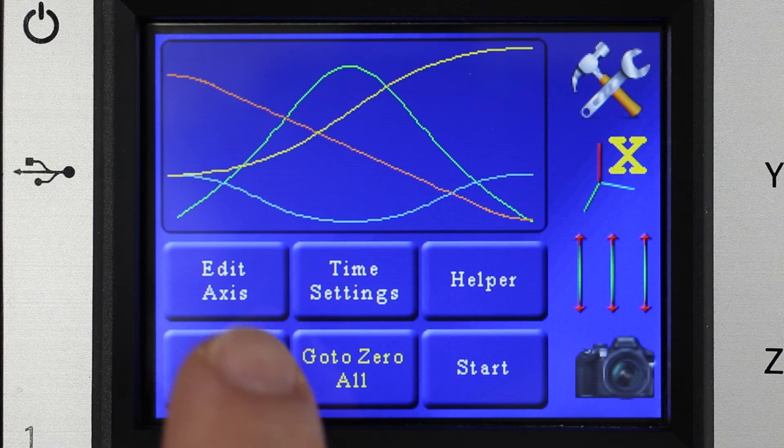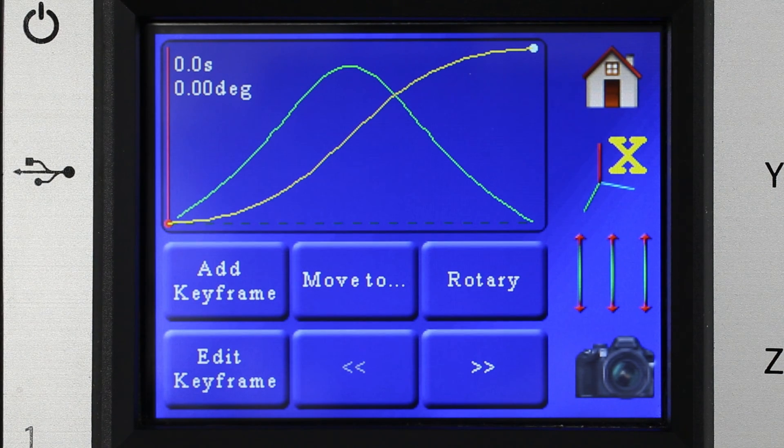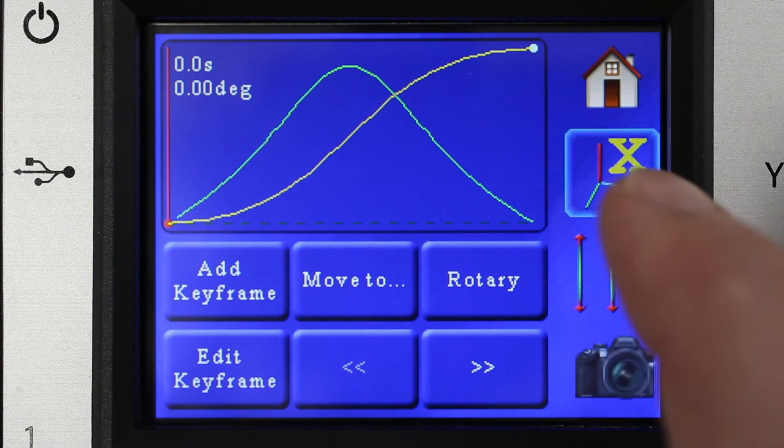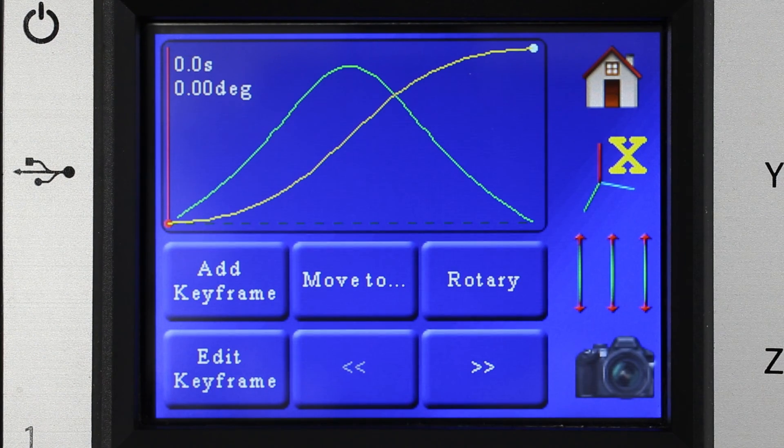To do that we hit edit axis and now we're presented with a single axis move. We can look at the other ones if we want just by pressing the different buttons over here to switch between the axis.